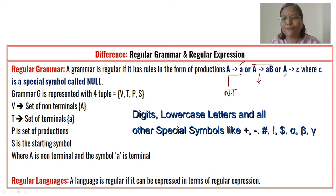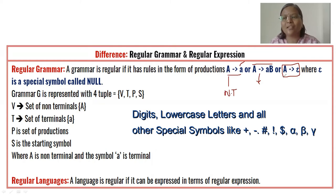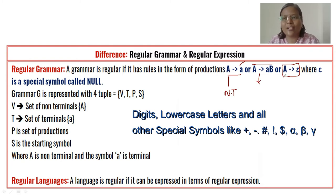The third form is a special form: a non-terminal produces epsilon. Epsilon is a special symbol treated as null or empty — it means doing nothing. It has some impact in the designing of grammar and formal languages, which are useful for developing programming languages, computer languages, and computing languages.